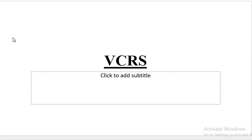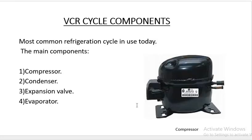This is a VCR system — a full-form working cycle. If you have a refrigeration cycle, you can use the VCR system. The main components are 4 components. The most common refrigeration cycle is a VCR system. The main parts are: compressor, condenser, expansion valve, and evaporator.